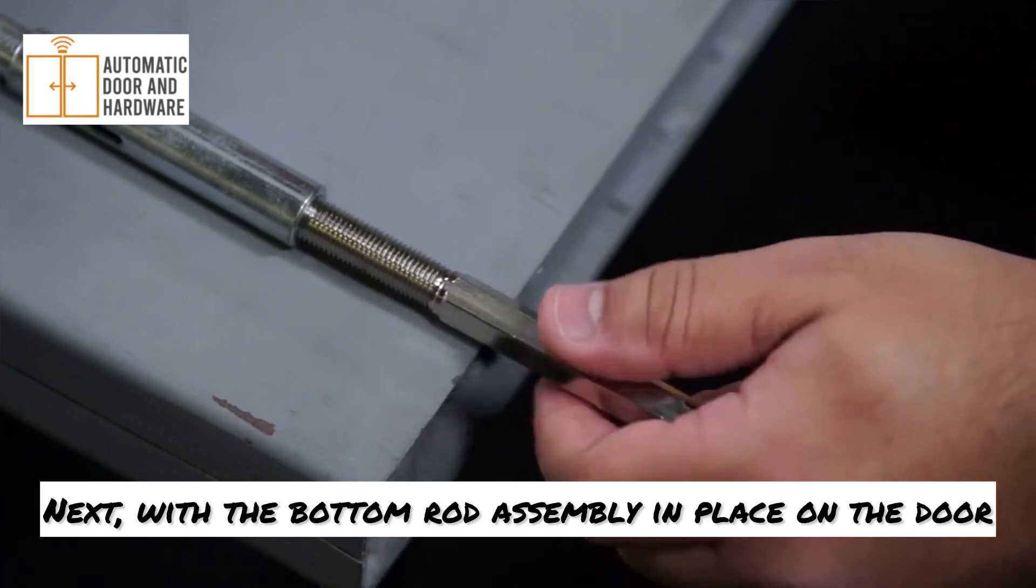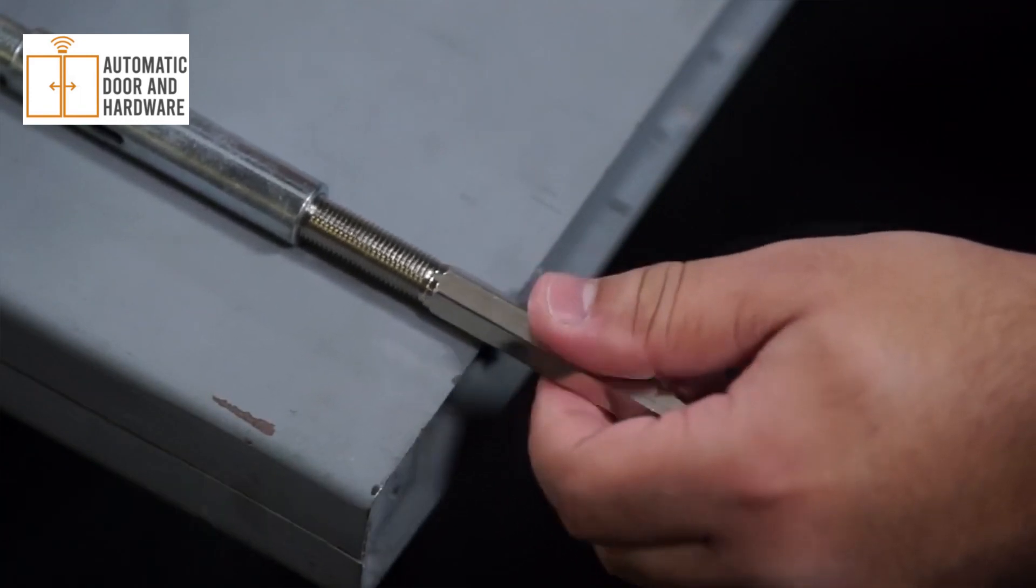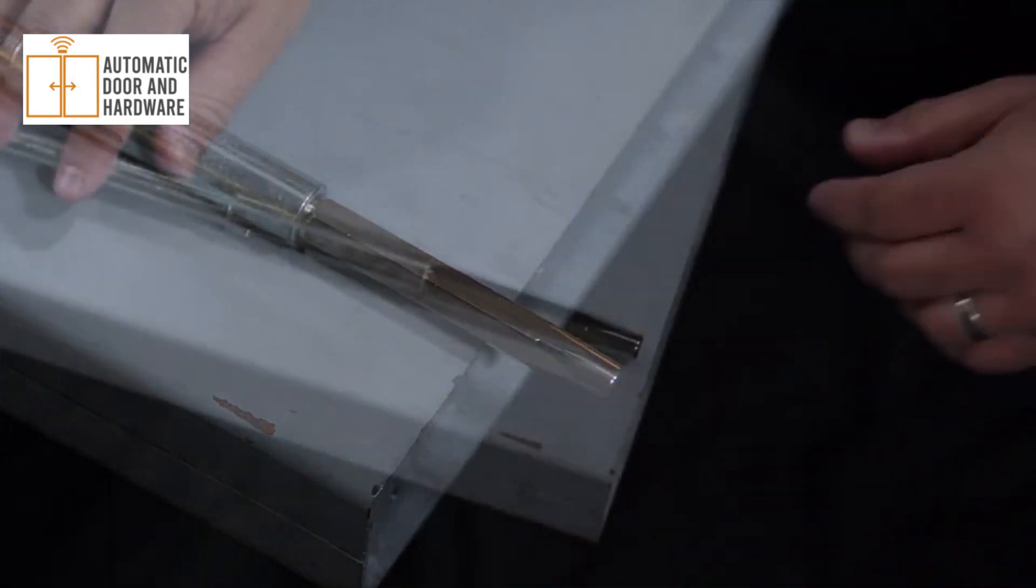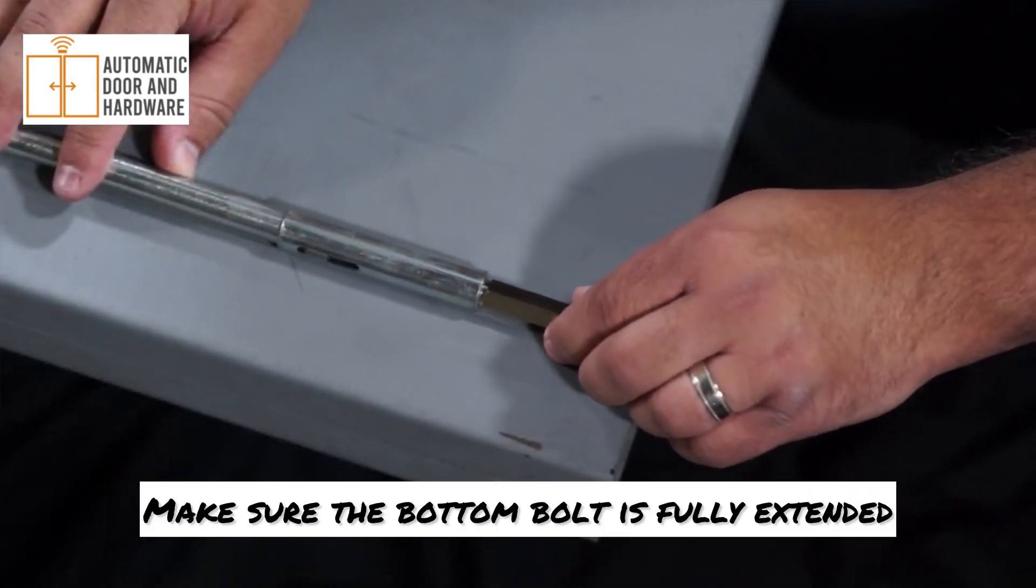Next, with the bottom rod assembly in place on the door, thread the dead bolt into the bottom rod. Make sure the bottom bolt is fully extended.